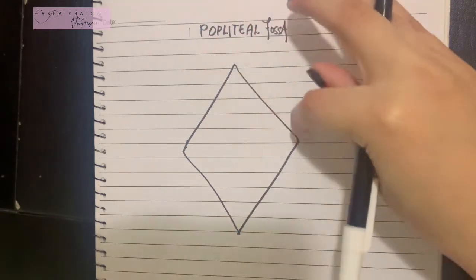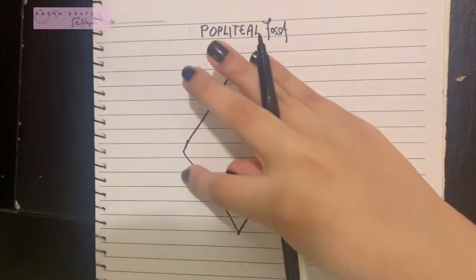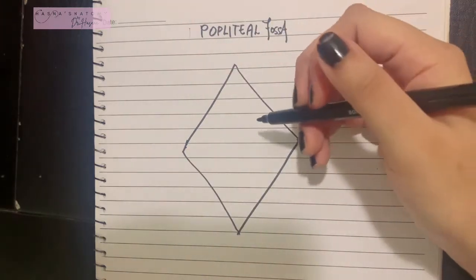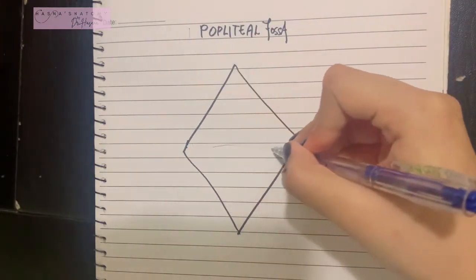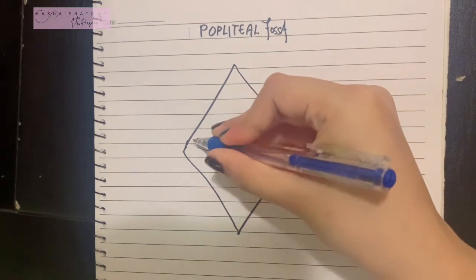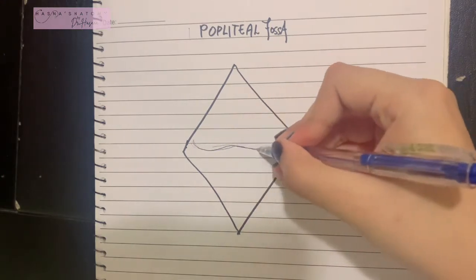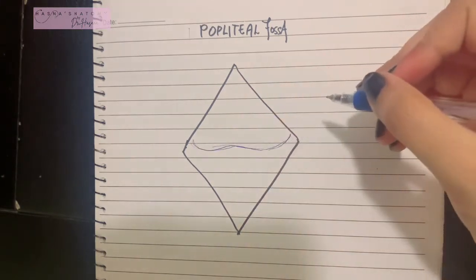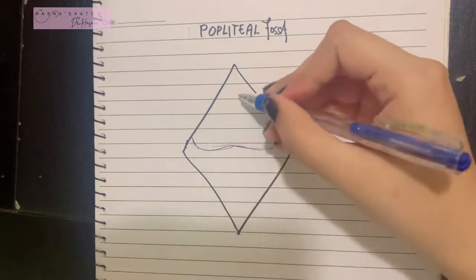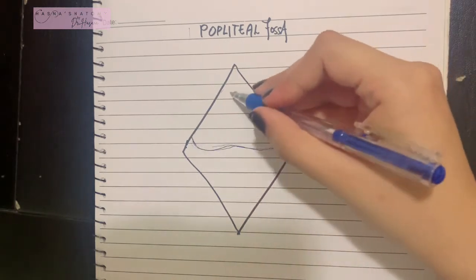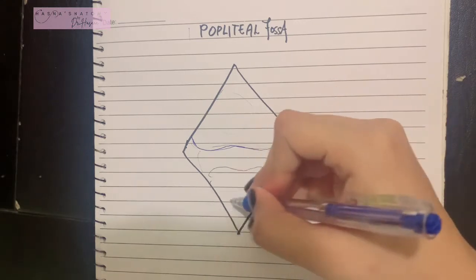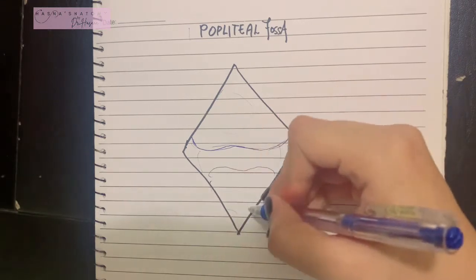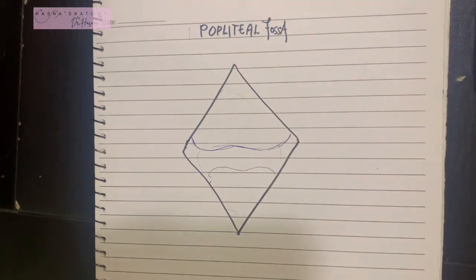The popliteal fossa is more prominent when the knee is flexed. From above downwards, you will see the lower end of the femur — the posterior surface of the femur was called the popliteal surface — so that's present here. The capsule of the knee joint is present here, and the tibia starts over here.